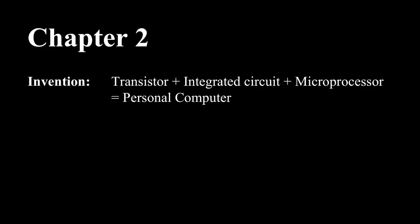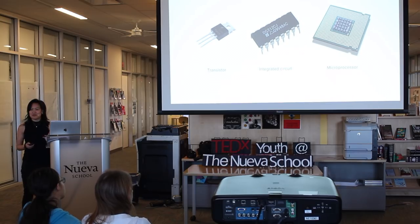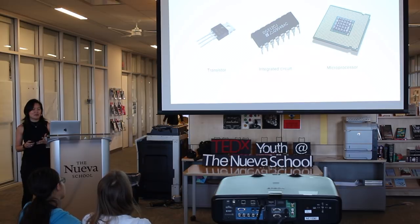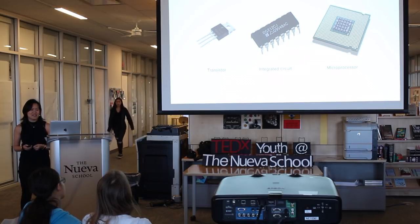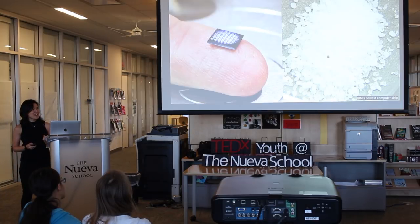There were three critical inventions that led the next phase of computing: the transistor, the integrated circuit, and the microprocessor. These inventions enabled computers to be smaller, cheaper, faster, and more efficient than computers built with vacuum tubes, and really began the trend towards miniaturization that continues to this day.